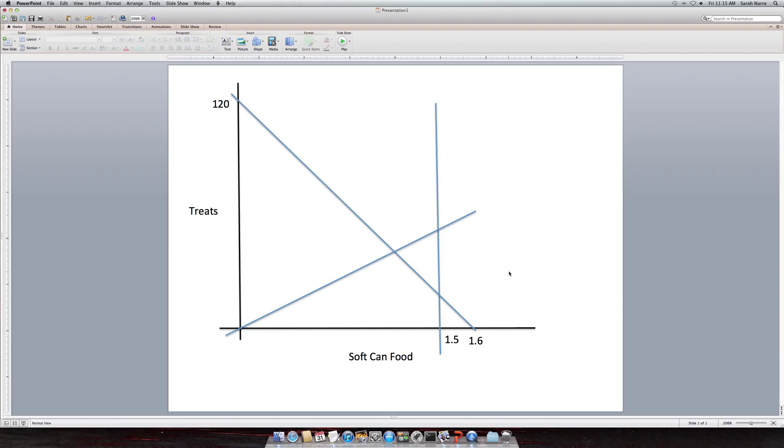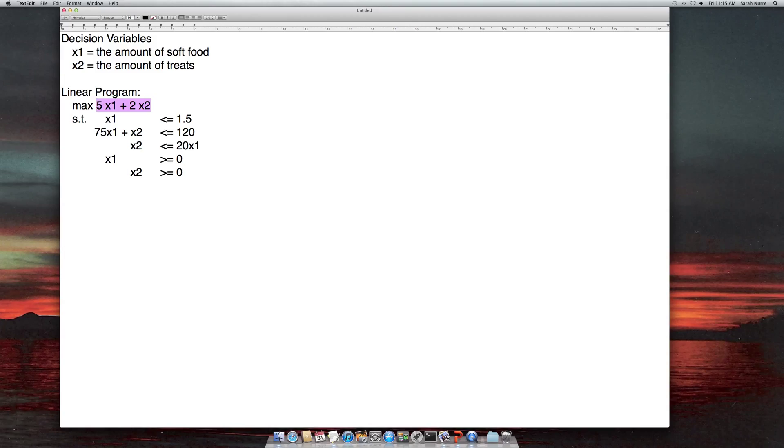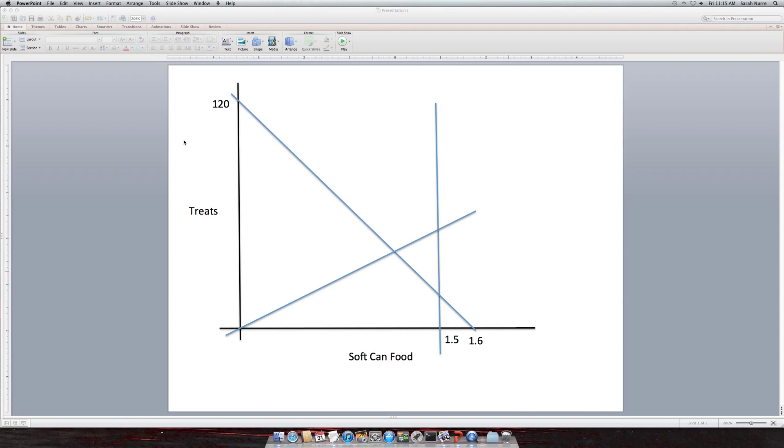And so what Professor Sharkey showed in class was the ability to take this objective function or he called it isoprofit line and map it and guess different values and move it out accordingly and then find where it intersects an extreme or corner point. In reality you could be guessing for a really long time, and if you don't trust your drawing slopes then you aren't necessarily sure if it's hitting the right extreme point that is optimal. So since we have such a small example what I personally would do would be enumerate the extreme points. So I know it's going to be optimal at either of these four points. I'm going to enumerate them and then just evaluate them at the objective function.